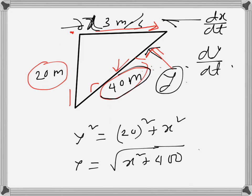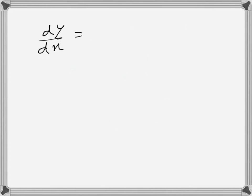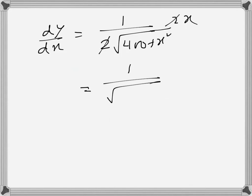So dy/dx becomes 1/(2√(400+x²)) times 2x, which simplifies to x/√(400+x²). So dy/dt is dy/dx times dx/dt.